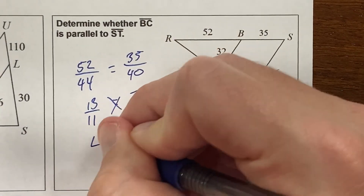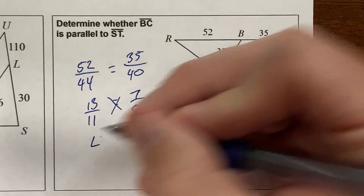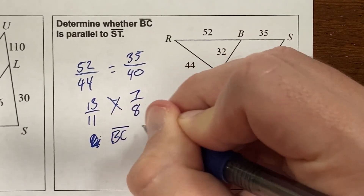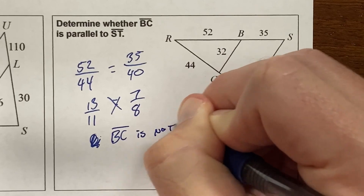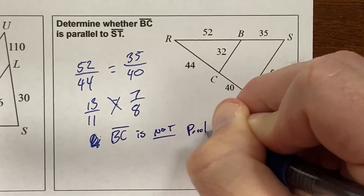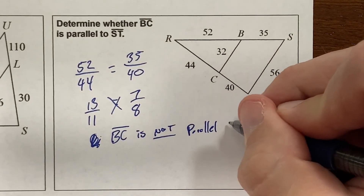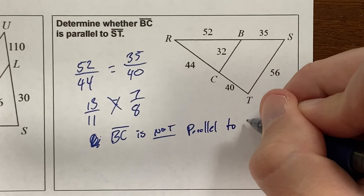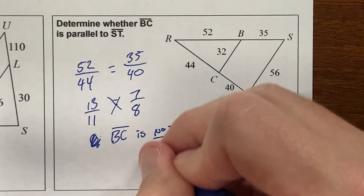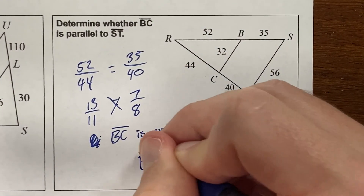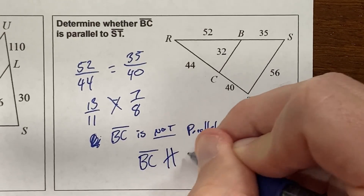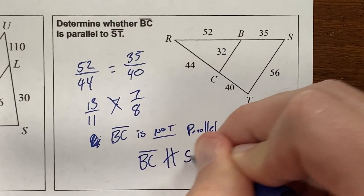So we would write: BC is not parallel to ST. You can write it out in words or use the not-parallel notation — BC with a crossed-out parallel symbol to ST.